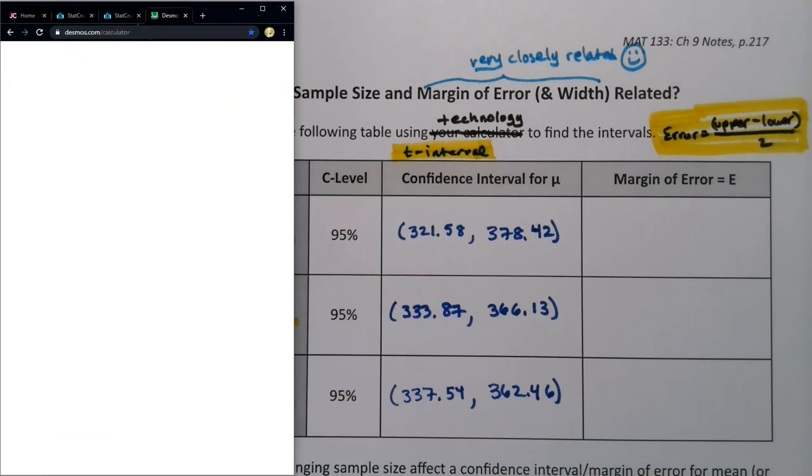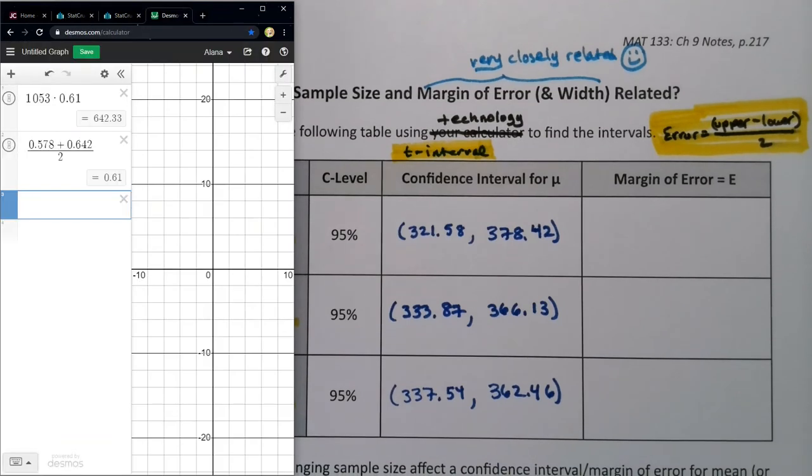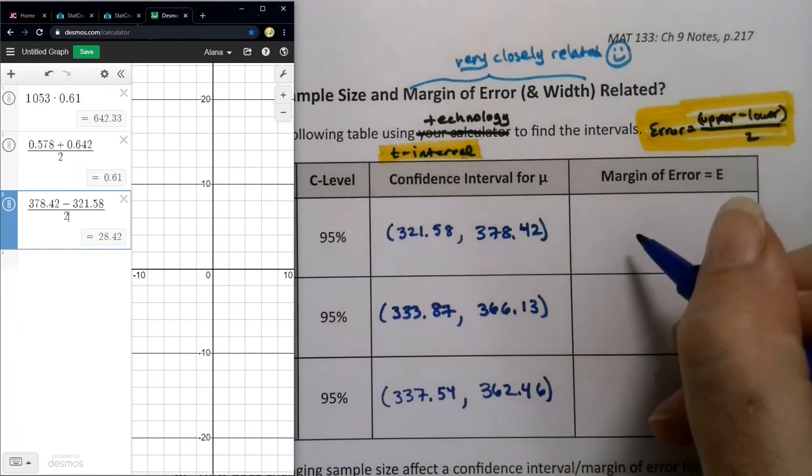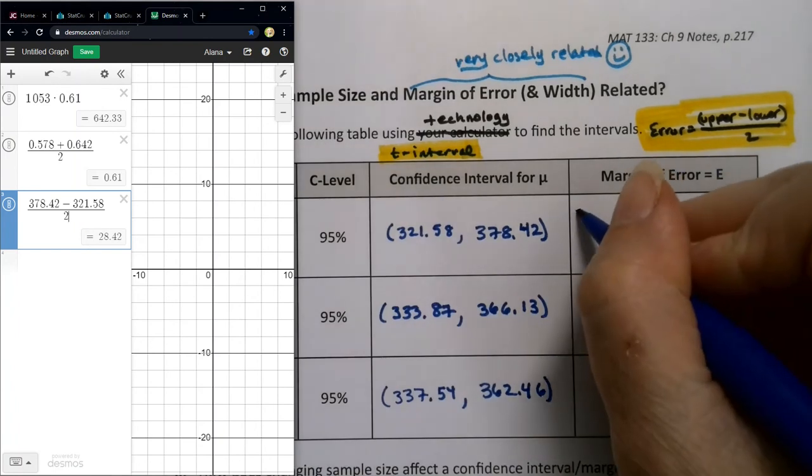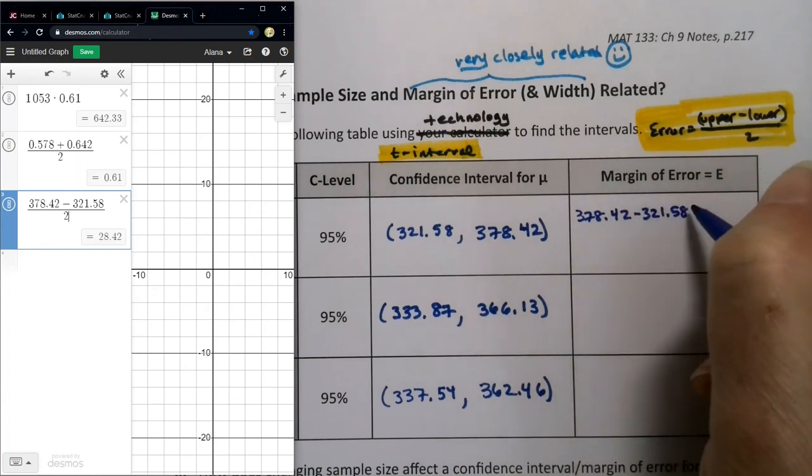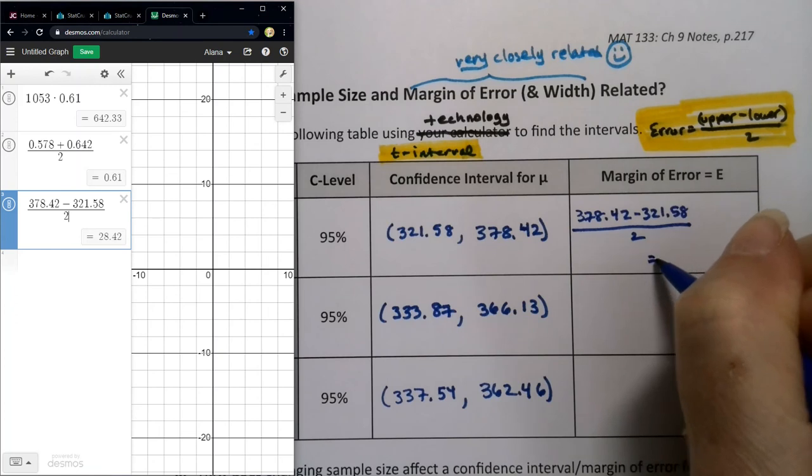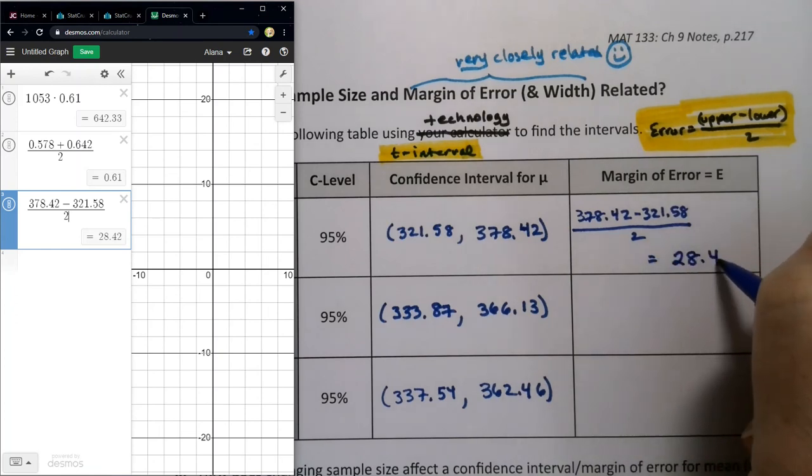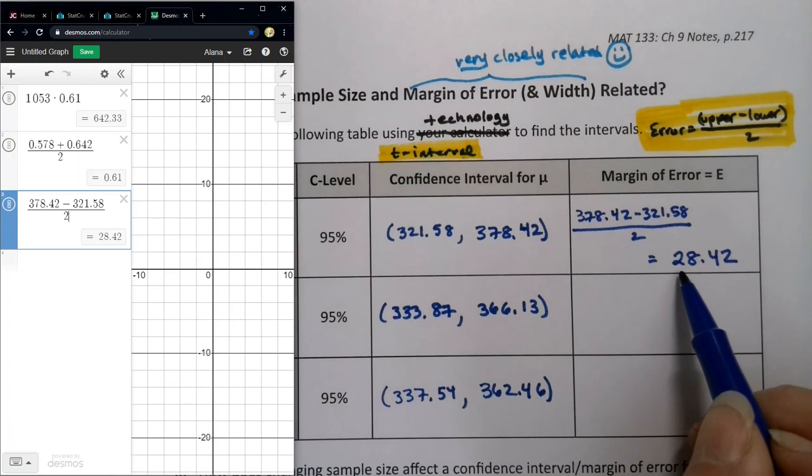Alright, so for margin of error, I'm leaving my calculator up because I want to grab Desmos here. So for Desmos, if I just type division bar first, if I type divide, it makes the fraction for me. And then I can type 378.42 minus 321.58, and then arrow down and type two. And I get that the margin of error is 28.42. So I'm just going to write it out for my own self. That way we know. I'm not going to write all of these. That's just silly. But I'm going to write the first one just so we can see it. So this one has a margin of error of 28.42.